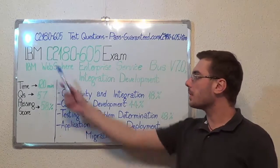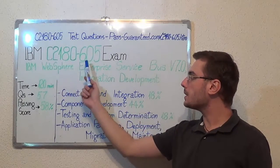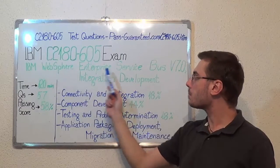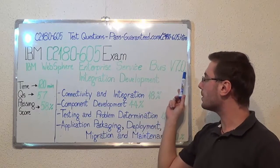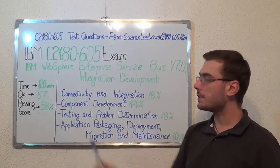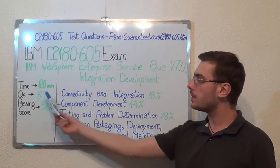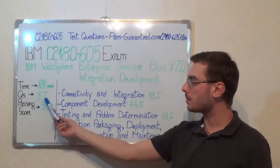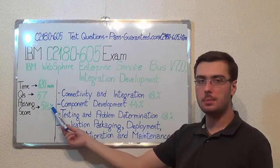Hello everyone, today I will present you the IBM C2180-605 exam, IBM WebSphere Enterprise Service Bus V7.0 Integration Development. Here you have some basic testing information. The duration of this exam is 120 minutes, there are 57 questions, and the minimum passing score is 58%.